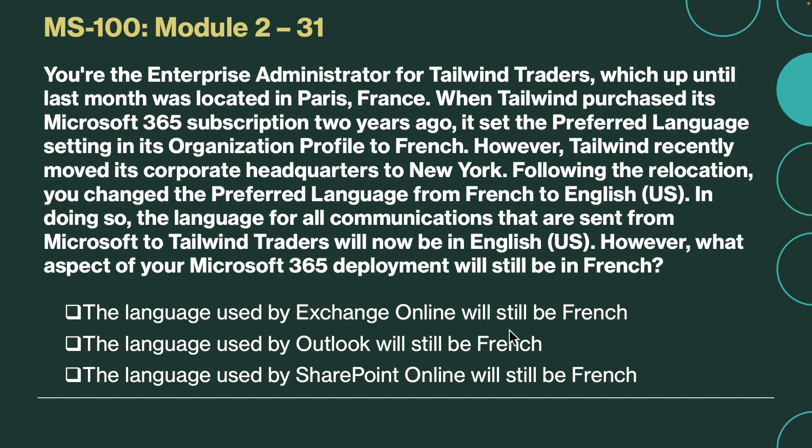The next question. You are the enterprise administrator for Tailwind Traders, which up until last month was located in Paris, France. When Tailwind purchased its Microsoft 365 subscription two years ago, it set the preferred language setting in its organizational profile to French. However, Tailwind recently moved its corporate headquarters to New York. Following the relocation, you changed the preferred language from French to English. In doing so, the language for all communications sent from Microsoft to Tailwind Traders will now be in English. However, what aspect of your Microsoft 365 deployment will still be in French?